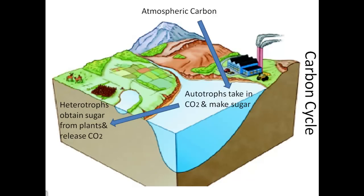Then, heterotrophs obtain sugar from the plants and release the carbon dioxide back up into the atmosphere. Once again, from the atmosphere down to the autotrophs through the process of photosynthesis into the heterotrophs, which eat the plants. They make energy releasing carbon dioxide back up into the atmosphere.